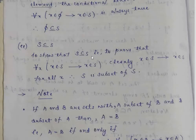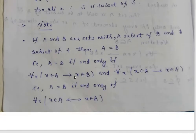To show that S is a subset of S, we have to prove that for all x, x element of S implies x element of S. Clearly x element of S implies x element of S for all x, therefore S is a subset of S. If A and B are sets with A subset of B and B subset of A, then A equals B. That is, A equals B if and only if A subset of B and B subset of A.